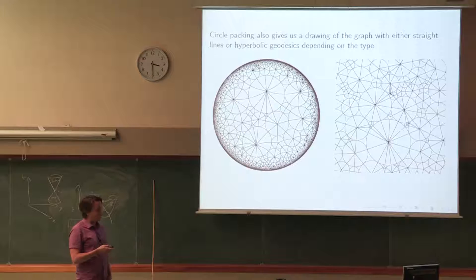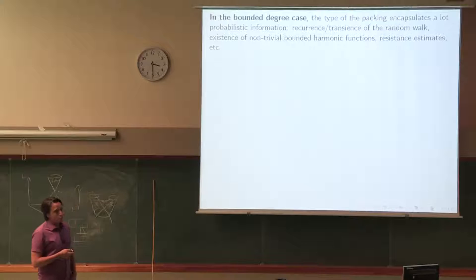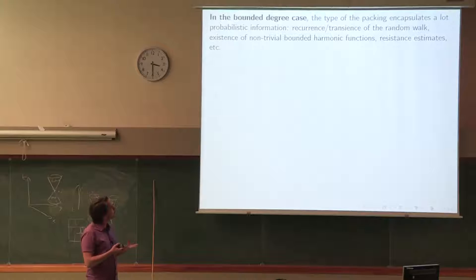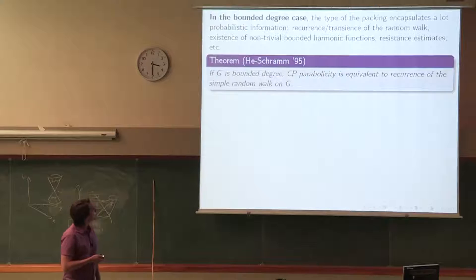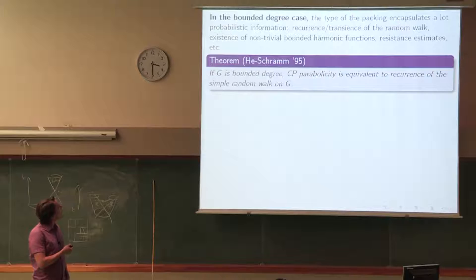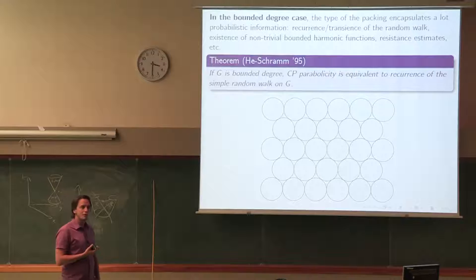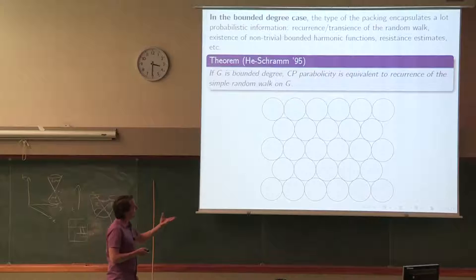Here's the theorem: if you are CP parabolic and in a bounded degree situation, then you are recurrent for the simple random walk on the graph. This theorem really does use the fact that the degree is bounded. If you allow unbounded degree, you can create pathology — for instance, starting with the triangular lattice and adding little circles in the interstices, the random walker acquires a slight drift to the right.